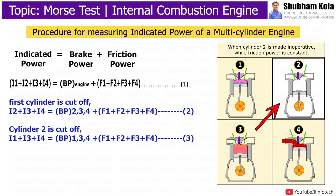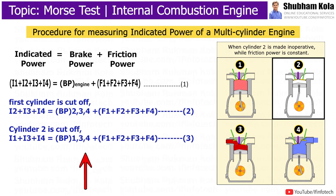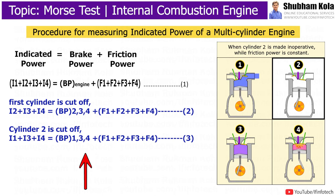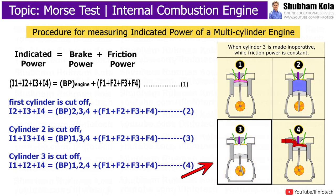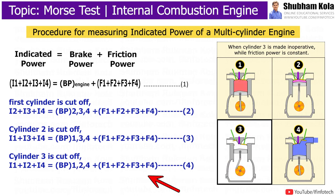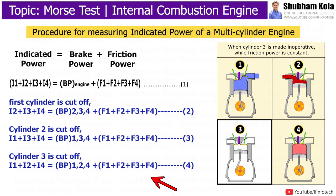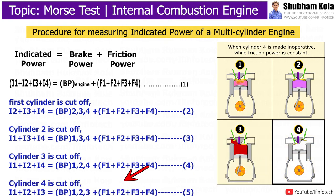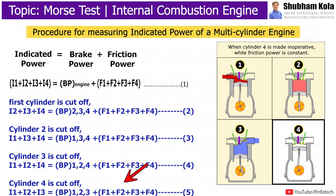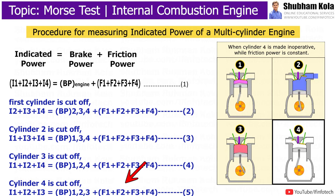When cylinder 2 is cut off, equation 1 becomes: i1 + i3 + i4 is equal to the brake power of cylinders 1, 3, and 4 only, plus frictional power f1 + f2 + f3 + f4. When cylinder 3 is cut off, equation 1 becomes: i1 + i2 + i4 is equal to the brake power of cylinders 1, 2, and 4, plus frictional power f1 + f2 + f3 + f4. When cylinder 4 is cut off, equation 1 becomes: i1 + i2 + i3 is equal to the brake power of cylinders 1, 2, and 3, plus frictional power f1 + f2 + f3 + f4.